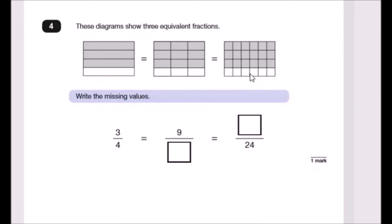Oh, fractions, I love this. So these diagrams show three equivalent fractions. It just looks to me that we got three squares across. Now what we want to do here is firstly count how many shaded. So we've got one, two, three shaded out of four, so that's why we've got three quarters here.